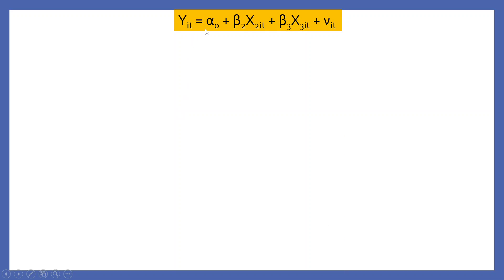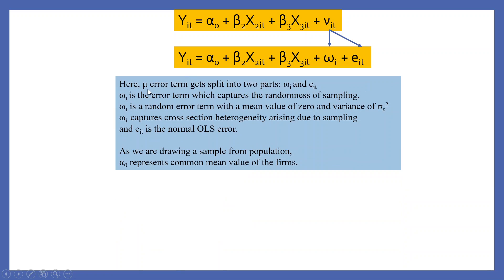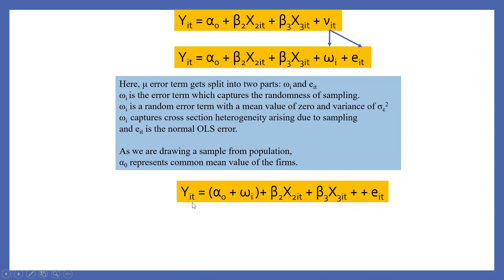Let's understand the math. Y_it = alpha0 + beta2*X2_it + beta3*X3_it + V_it. Now V_it is divided into two parts: omega_i + e_it. Omega_i is a random error term with mean 0 and variance sigma-squared-e, which captures cross-section heterogeneity arising due to the sample. E_it is a normal OLS error term. So Y_it = alpha0 + omega_i + beta2*X2_it + beta3*X3_it + e_it. As we are drawing a sample from the population, alpha0 represents the common mean value of the firms.